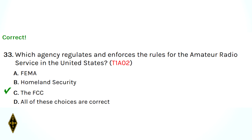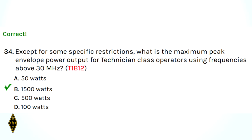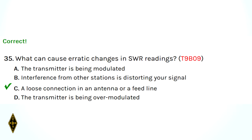Question 33: which agency regulates and enforces the rules for amateur radio? That would be the FCC. Question 34: except for some specific restrictions, what is the maximum peak envelope power for Technician class operators? Above 30 megahertz, the full legal limit — 1,500 watts. Question 35: what can cause erratic changes in SWR readings? A loose connection in an antenna or feed line — if it's moving around in the wind, you'll see the SWR go up, down, up, down.